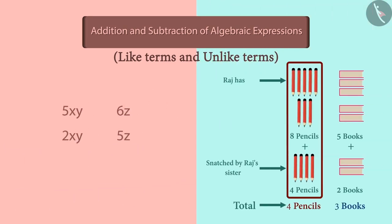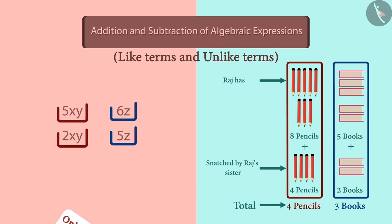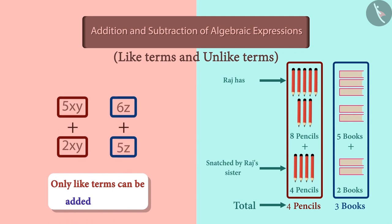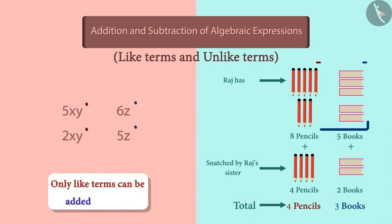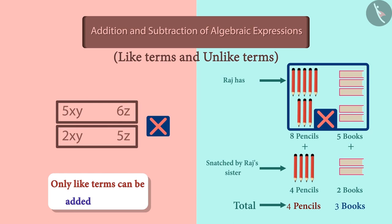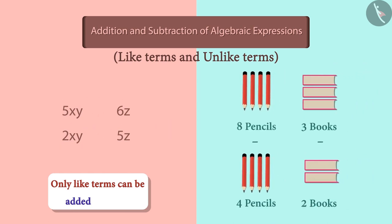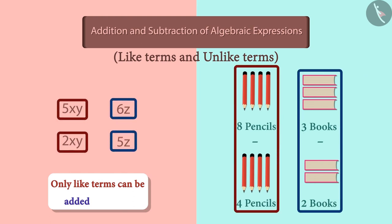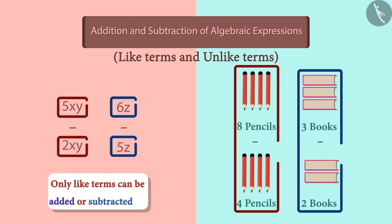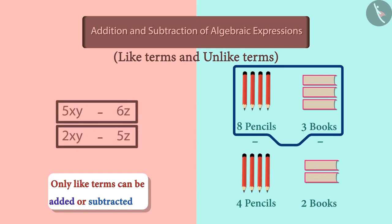Just like we added pencils to pencils and books to books, similarly, we can only add two like terms to each other. We never associate pencils with books. In the same way, we cannot add two unlike terms to each other. The same is the case with subtraction. Only like terms can be subtracted from each other. We cannot subtract two unlike terms.